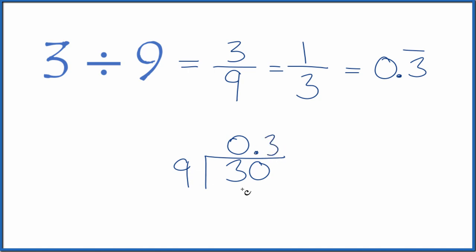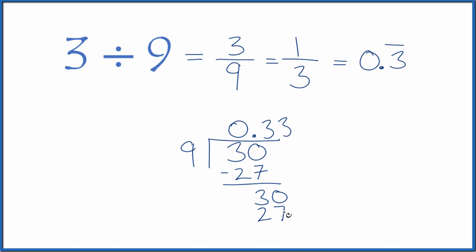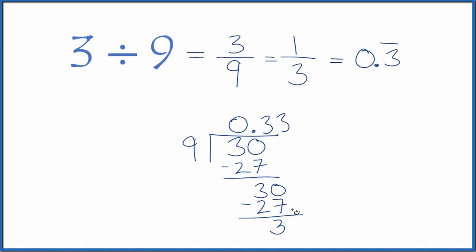So 3 times 9, that's 27. When we subtract, we get 3. Let's call it 30 and move over 1. 3 times 9, that's 27. We subtract, we get 3.